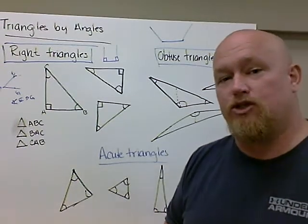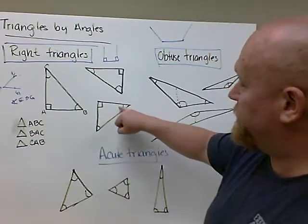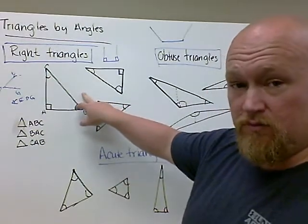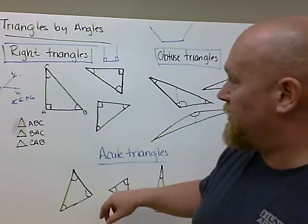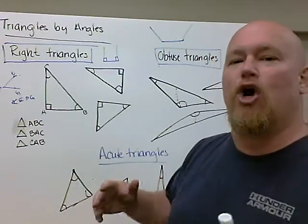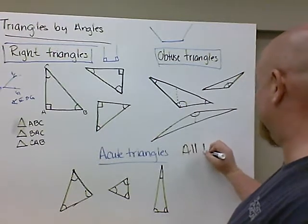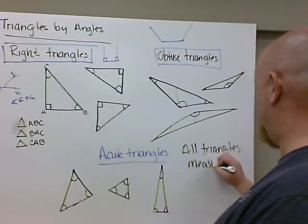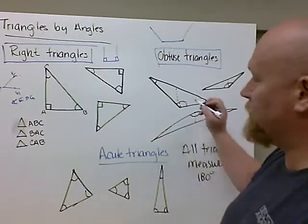Now, final interesting bit that you'll work more with in fifth grade is that if you add up the measurements of all three angles, whether it's a right triangle, whether it's an obtuse triangle, or whether it's an acute triangle, no matter what, if you add up these three angle measurements, every single time, it's always going to be 180 degrees.